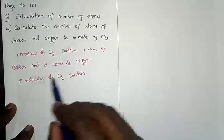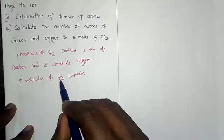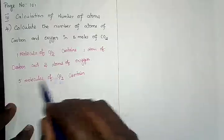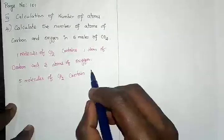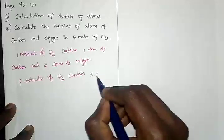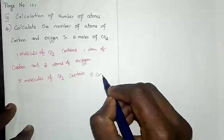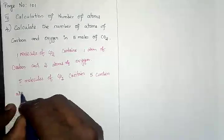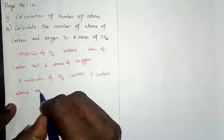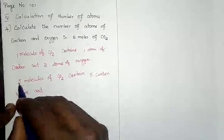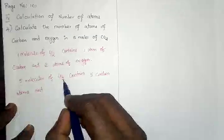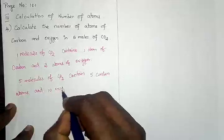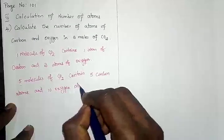For five molecules, you multiply: one carbon times five gives five carbon atoms, and two oxygen times five gives ten oxygen atoms. So five molecules of carbon dioxide contain five carbon atoms and ten oxygen atoms.